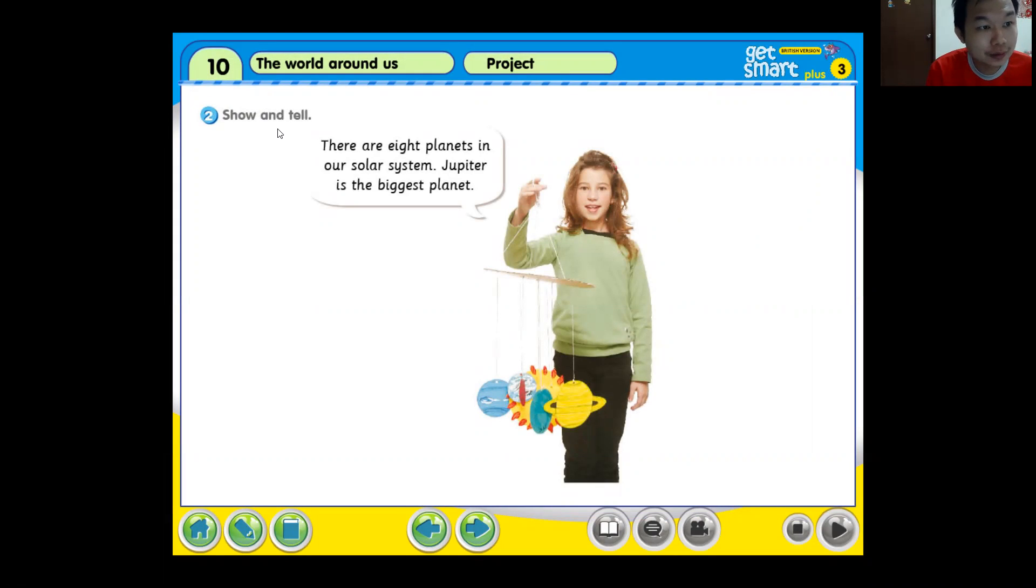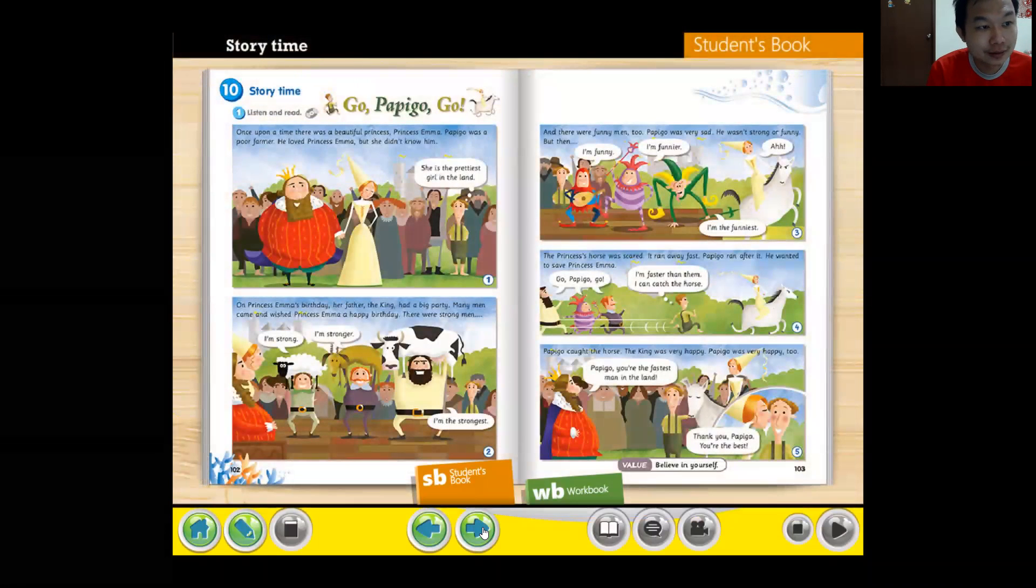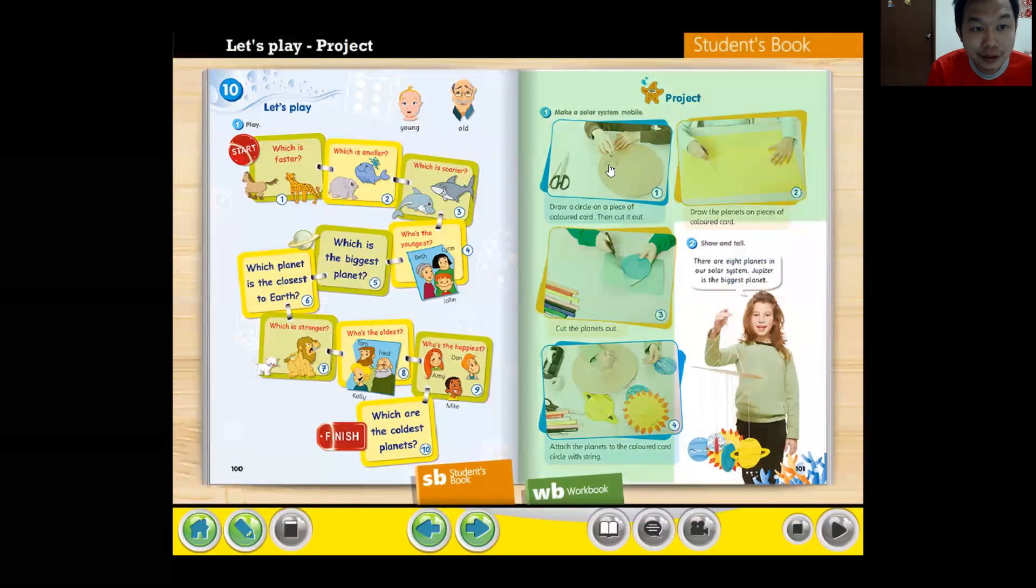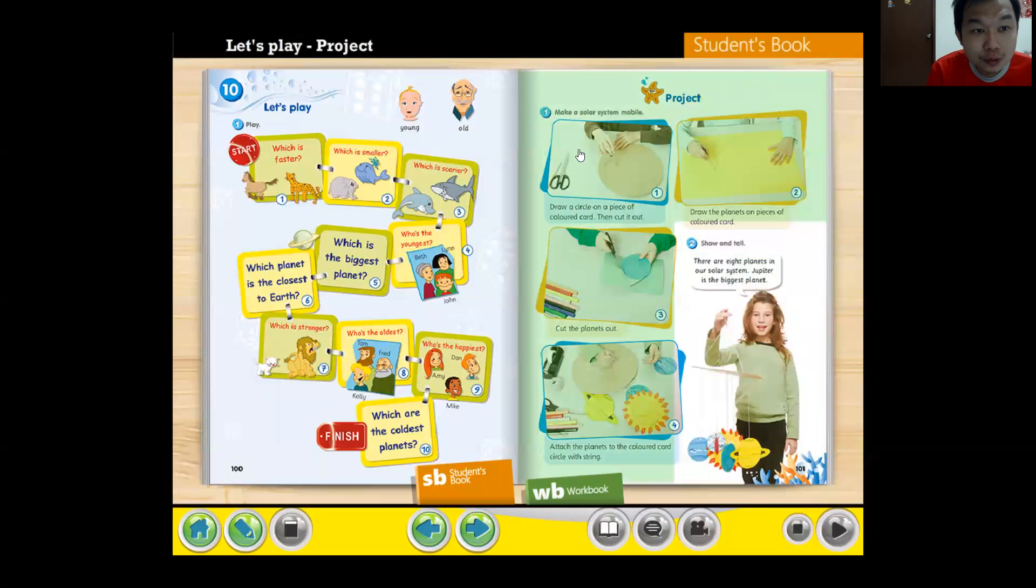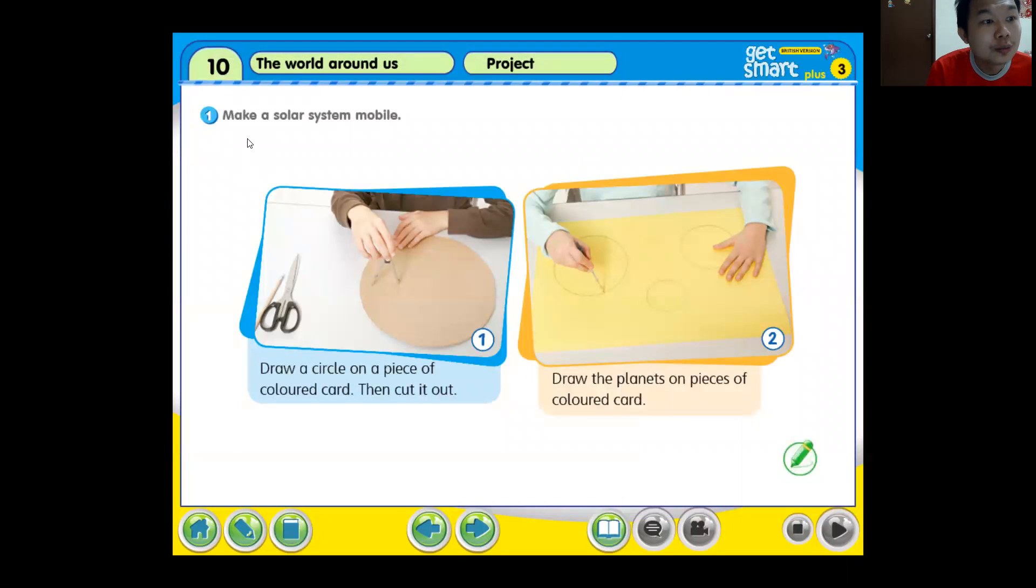Show and tell. There are eight planets in our solar system. Jupiter is the biggest planet. So here actually we are going to make a solar system mobile.